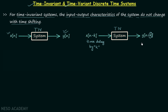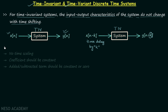We have already been through a lot of discussion on time invariant and time variant systems while studying continuous time systems, where we solved many examples and obtained three important conclusions. We will quickly revise those conclusions and use them to solve the problems.